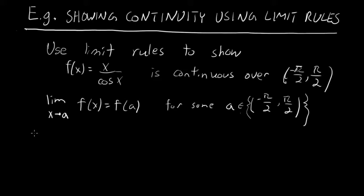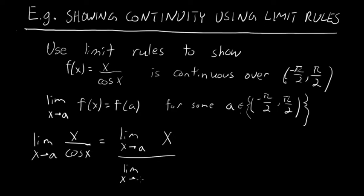Okay, so here we have the limit as x approaches a of x/cos(x). We know that the limit of a quotient is the quotient of the limits, provided that the denominator limit is not zero. So this is the same thing as the limit as x approaches a of x over the limit as x approaches a of cos(x), provided this limit is not zero.